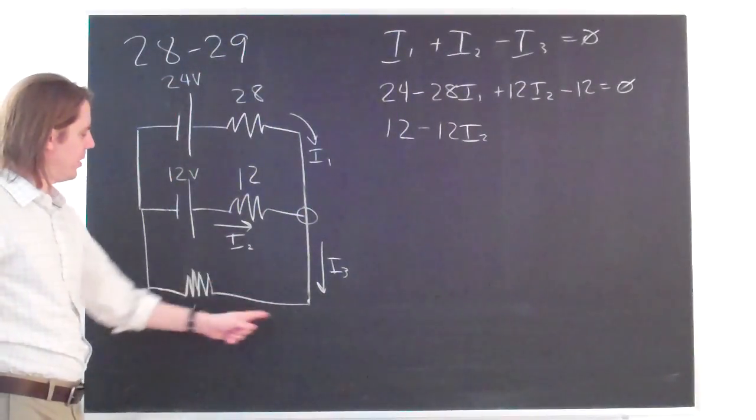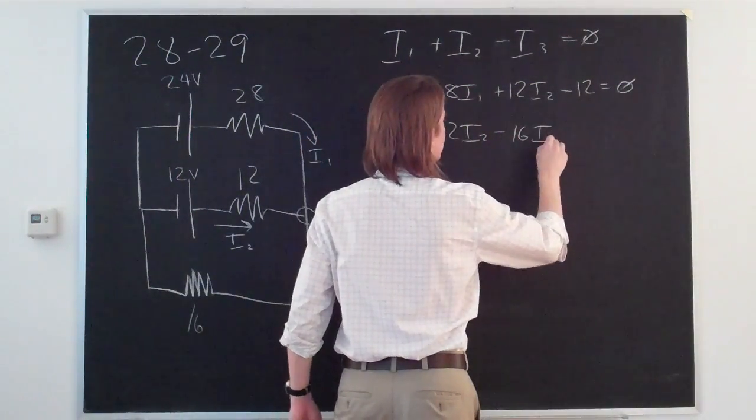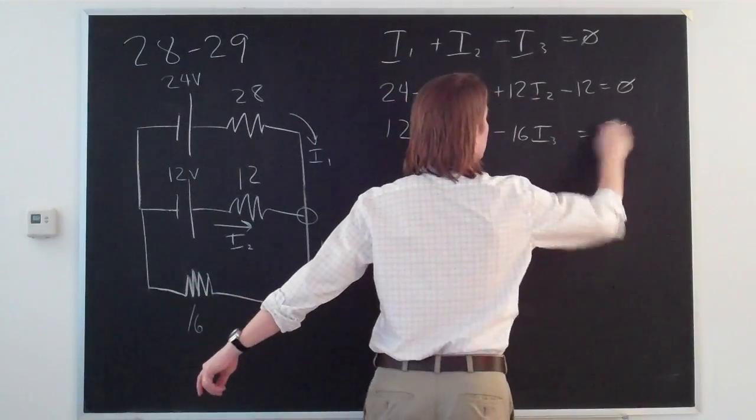And then all the way around. And with I3 minus 16 ohm resistor. And then back up. That equals zero.